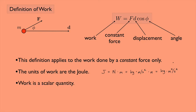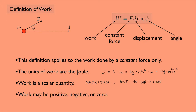Work is a scalar quantity, not a vector quantity. That means it has a magnitude which could be a positive number, a negative number, or zero, but it does not have a direction. Vector quantities have a direction attached to them as well as a magnitude. Work may be positive, negative, or zero.